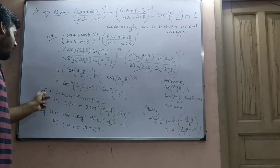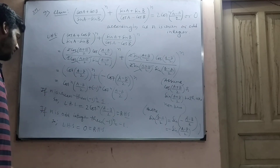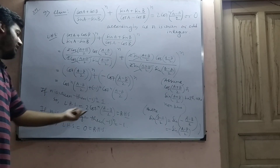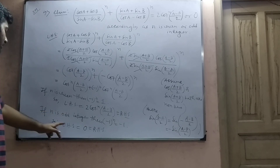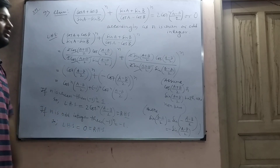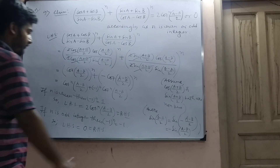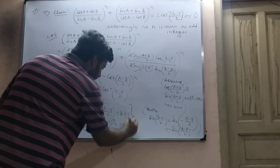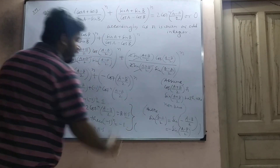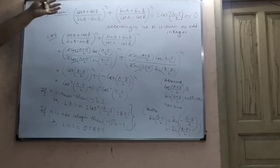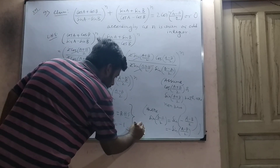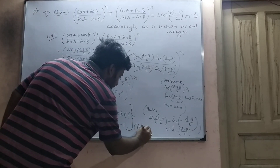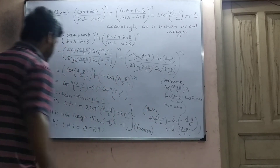So if n is an even integer, then LHS equals RHS. And if n is an odd integer, then LHS equals RHS. From these two cases, the claim is proved.